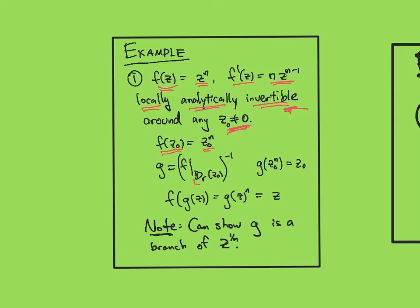So if I plug in z0, I'll get out z0 to the n. So there'll be a disk around z0 where f restricted to that disk is invertible and the inverse function is analytic. So I'll get this g here as this inverse function that maps z0 to the n to z0. And what equation does it satisfy? Well, f composed with g gives me z.